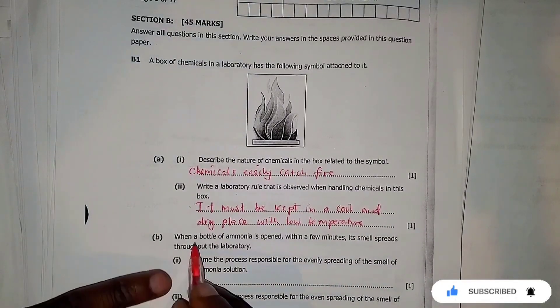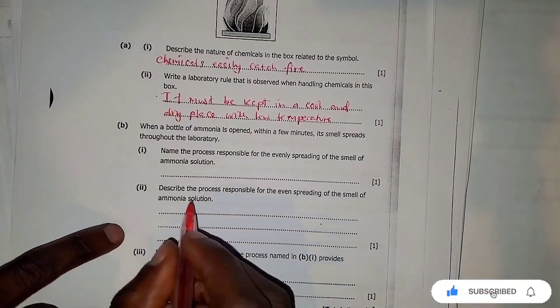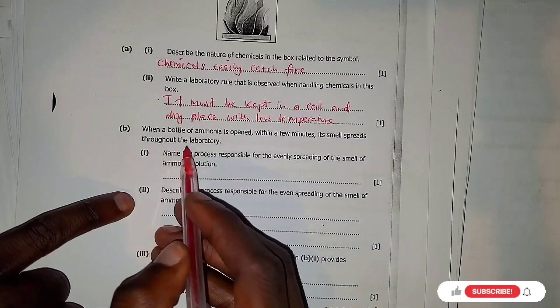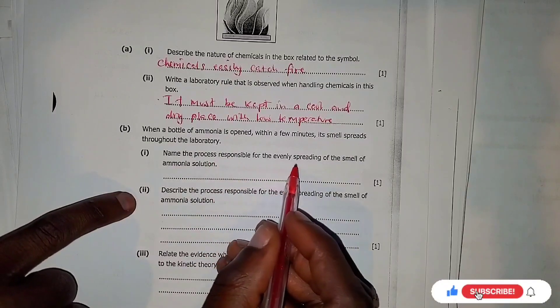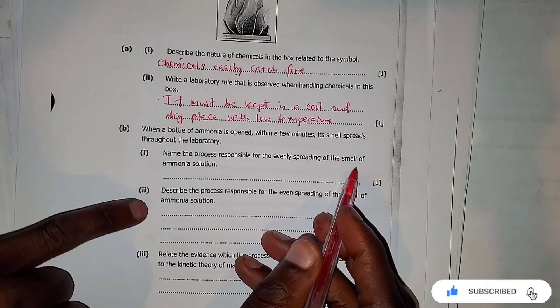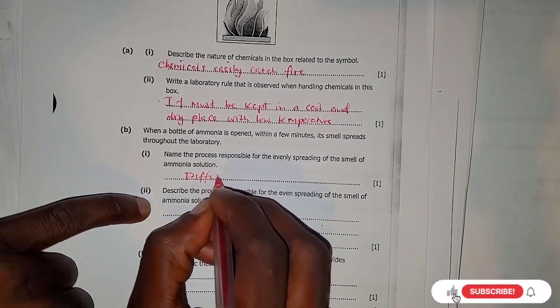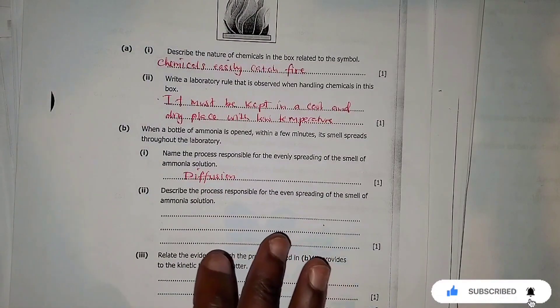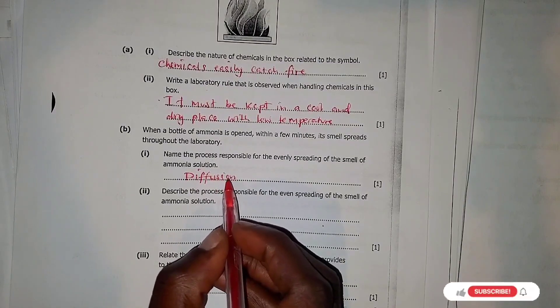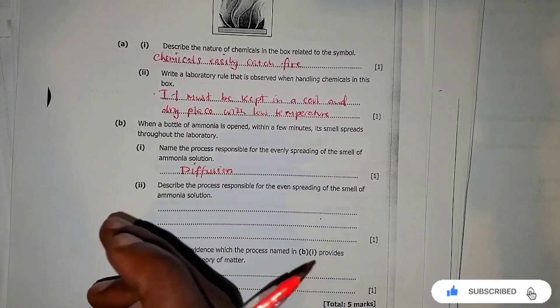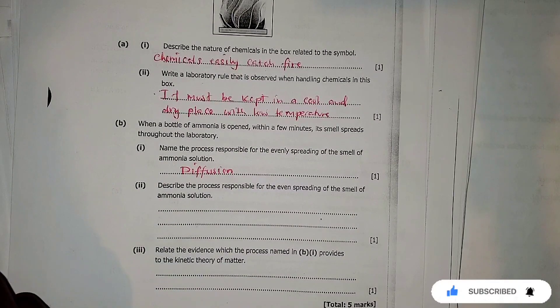When a bottle of ammonia is opened, within a few minutes the smell spreads throughout the laboratory. The process responsible for the evenly spreading of the smell of ammonia is called diffusion — not osmosis or active transport, but diffusion. Diffusion is the movement of particles from the region of higher concentration to the region of lower concentration, down the concentration gradient.